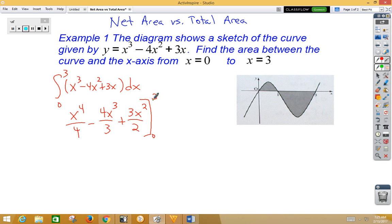Plugging in the 3, we would get 81 over 4 minus 4 times 27 over 3 plus 3 times 9 over 2. Let's go ahead and simplify that a little bit. We still have 81 over 4. I could cross-cancel the 27 and the 3, making a 9. So now I've got minus 36. And then 3 times 9 would be 27 halves.